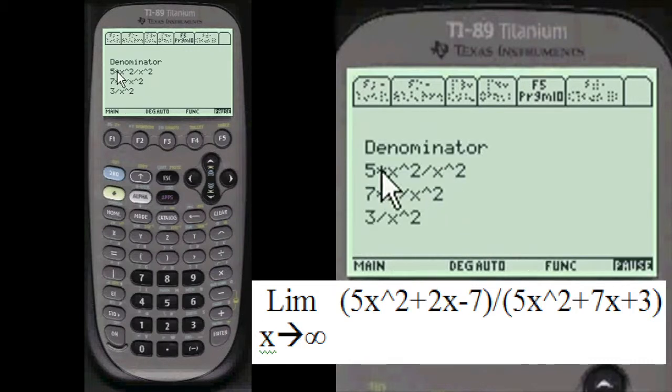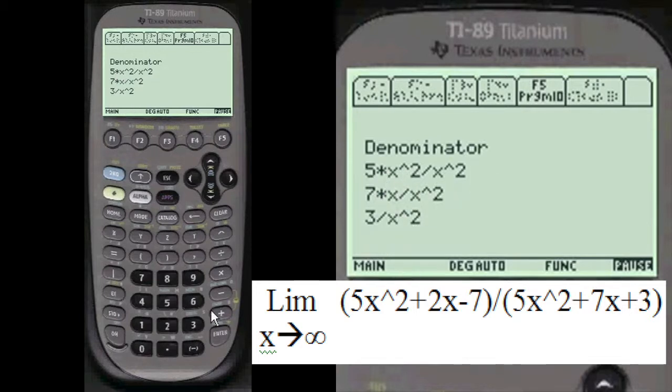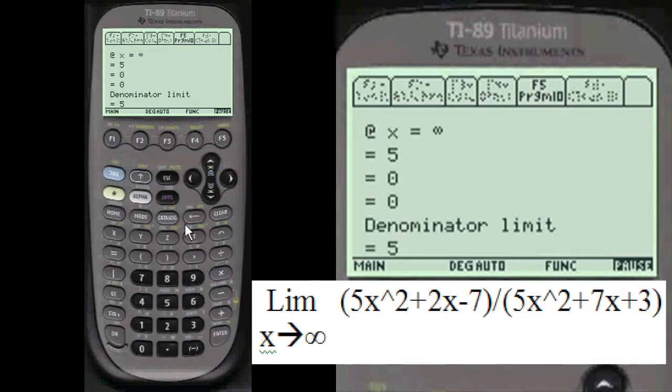The denominator terms are these on the left and divided by the X squared, that equals that, and that equals also 5.